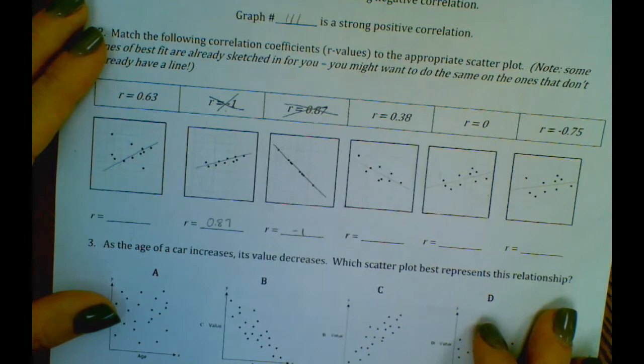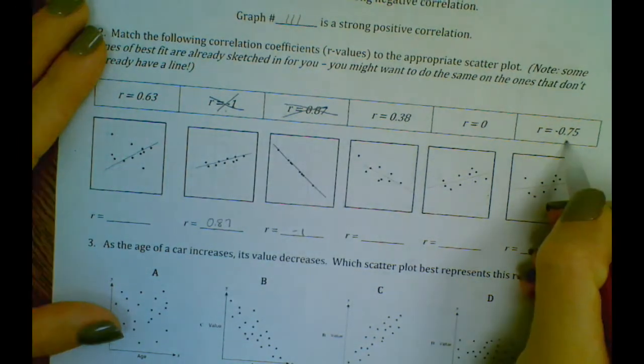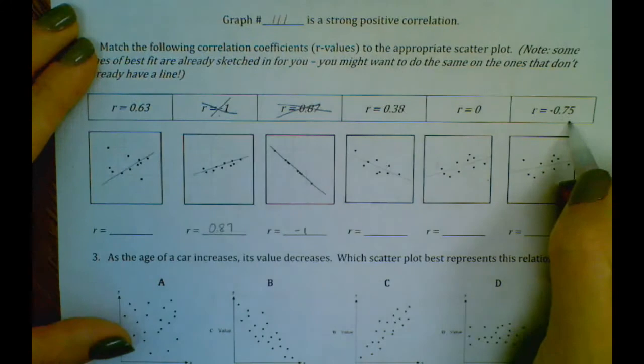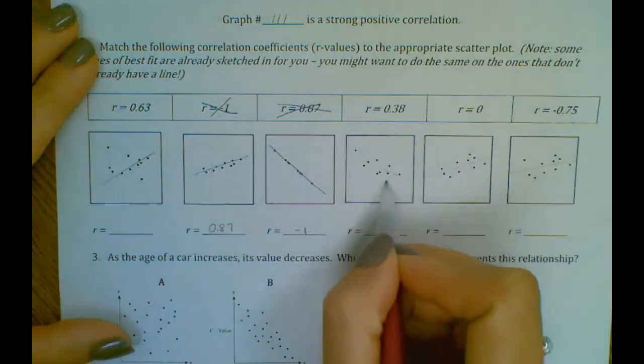Okay, and then our next strongest is this negative 0.75. That's going to be negative. So let's see, our only negative option here is this guy right here.